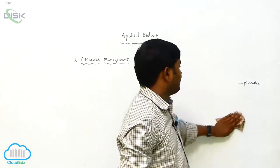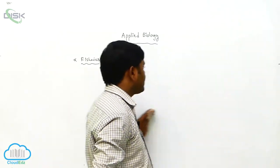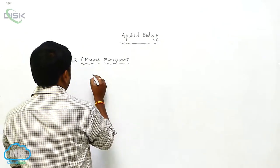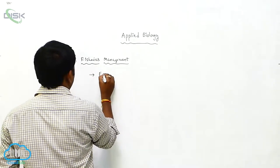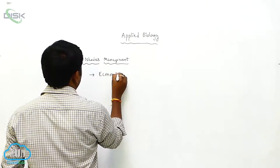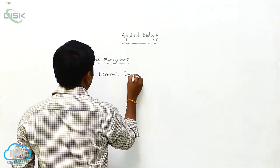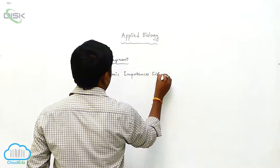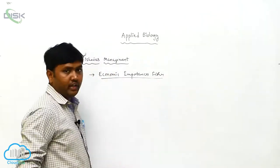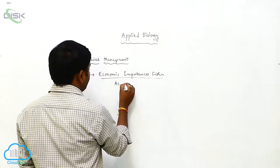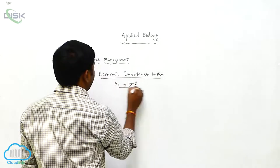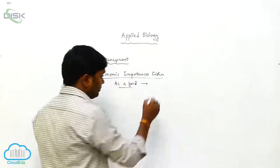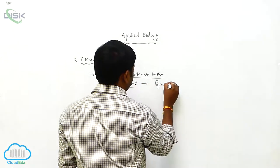So these are the examples for the fish culture. And next, economic importance of the fishes. So if you take as food, fish are a good meal.